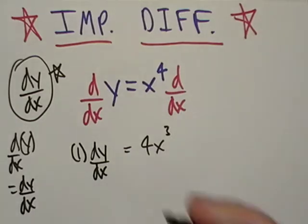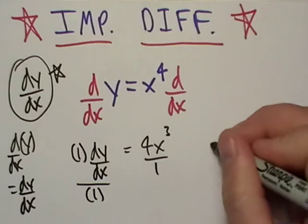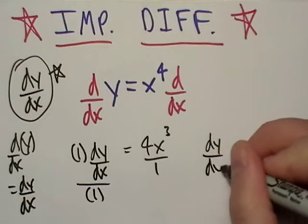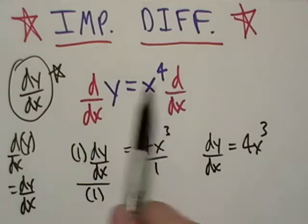Okay, now I want to find out what the derivative is, I want to get it by itself. So I divide both sides by one. Well, there I am. So really, we pretty much do it every time. We just don't always write out the process.